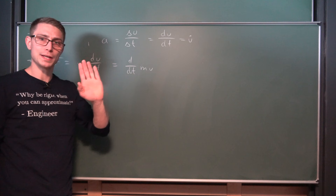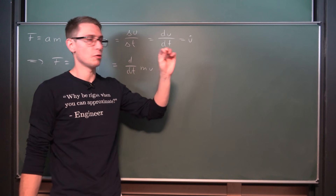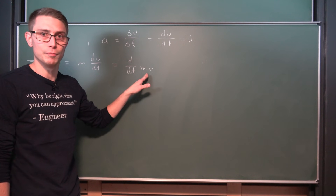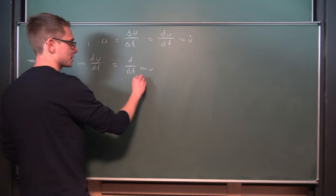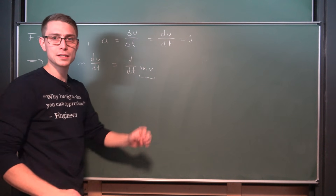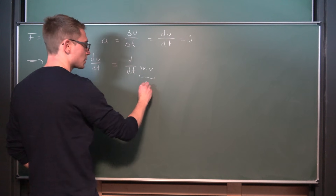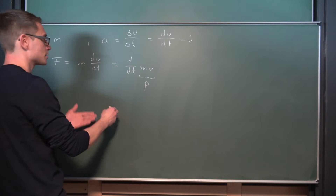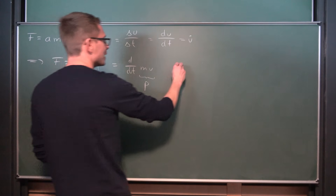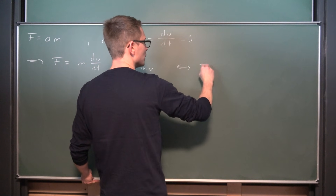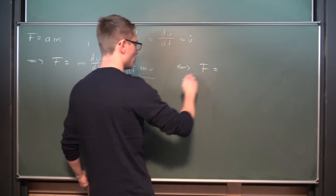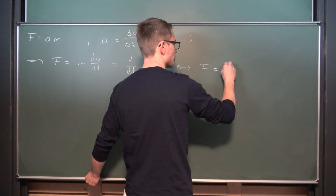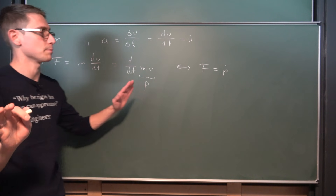The momentum of a particle is defined as the multiplication of mass and velocity of the particle. We call momentum P in physics because the word momentum starts with P. So overall we define the force as the change of momentum over time — P dot.